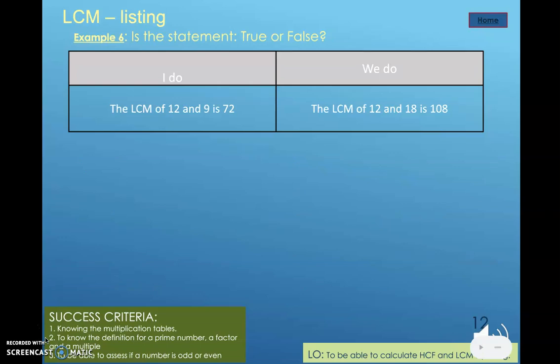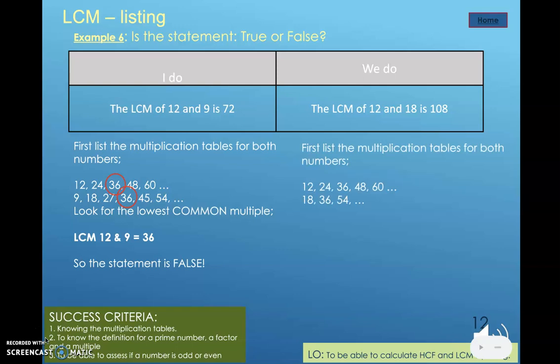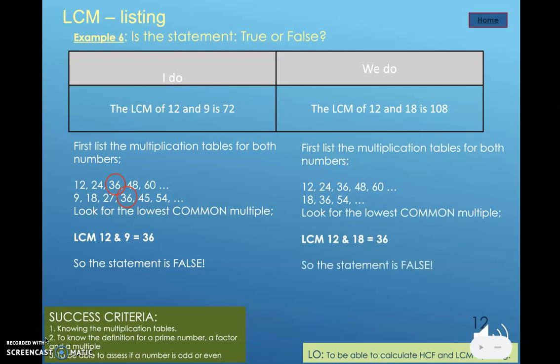Finally, we want to use these skills in a variety of ways — we are now deciding whether a statement is true or false. We are told that the lowest common multiple of 12 and 9 is 72. We list the multiplication tables of 12 and 9 and look for the lowest common multiple — we find it to be 36. Therefore, the statement is false. Pause the video for two minutes and calculate whether the statement in the We Do is true or false. We list the multiplication tables, find the lowest common multiple to be 36, so that statement is also false.